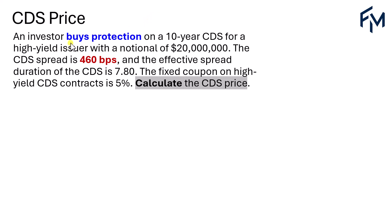In this example, an investor buys protection on a 10-year CDS for a high-yield issuer with a notional of $20 million. The CDS spread is 460 basis points or 4.6%, and the effective spread duration of the CDS is 7.8. The fixed coupon on high-yield CDS contracts is 5%. Calculate the CDS price.